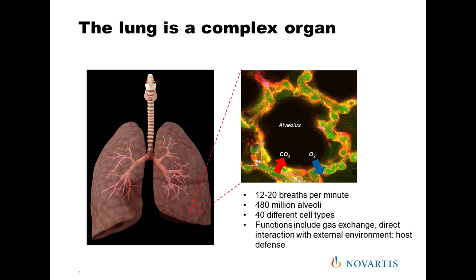Blood coming in and surrounding the alveolus will release CO2 that diffuses across into the alveolus, which is then removed as we exhale, while oxygen is brought back into the alveolus when we breathe in. This reoxygenates blood going out into the systemic circulation.